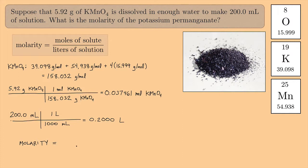So the molarity of the potassium permanganate is going to be the moles of solute. So that would be the 0.037461 moles of KMnO4 divided by the liters of solution. And that's this 0.2 number right here. And if you do this on a calculator, you get 0.187305. And that's in moles per liter. And we use a capital M to denote moles per liter.